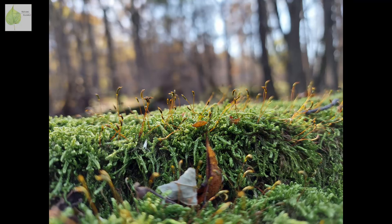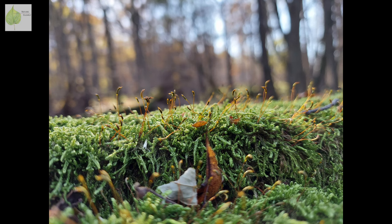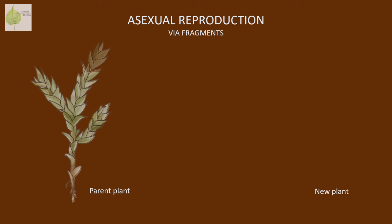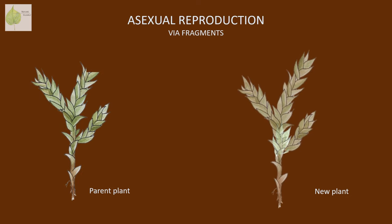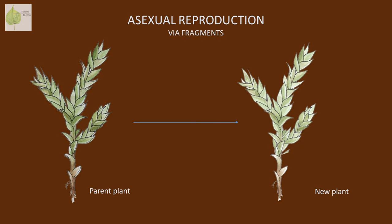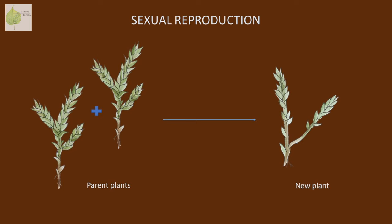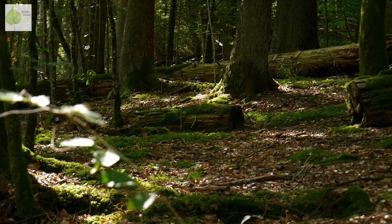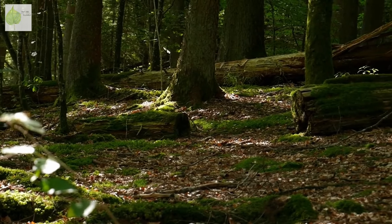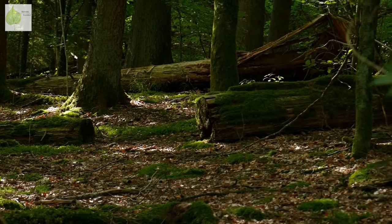So now that we know that mosses don't have flowers or seeds, how does their reproduction work? Mosses can reproduce both asexually and sexually. Asexual reproduction works via fragmentation, where pieces of vegetative tissue simply break off and regrow into a new plant genetically identical to the parent plant. On the other hand, sexual reproduction results in a plant with an equal combination of genetic material from two parent plants. Mosses sometimes take advantage of both, however sexual reproduction is more frequent.